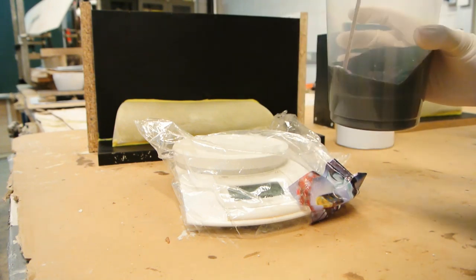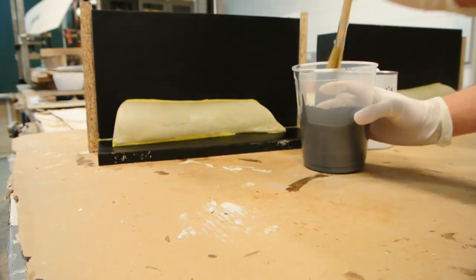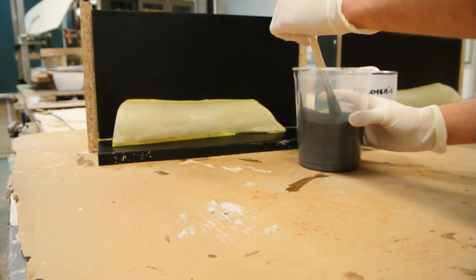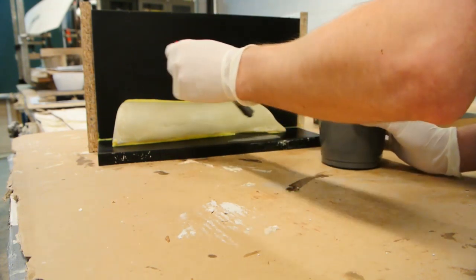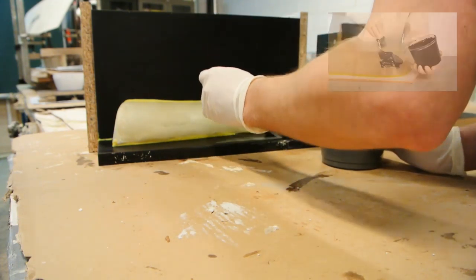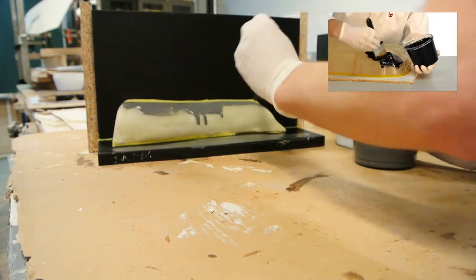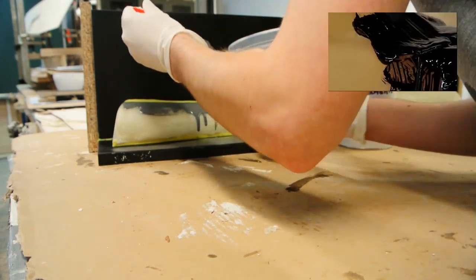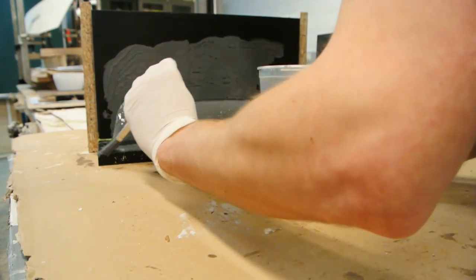After that, mix it well and brush it on like paint, all around and onto the part. It's important to have a flange around the part in case you want to do a vacuum infusion.